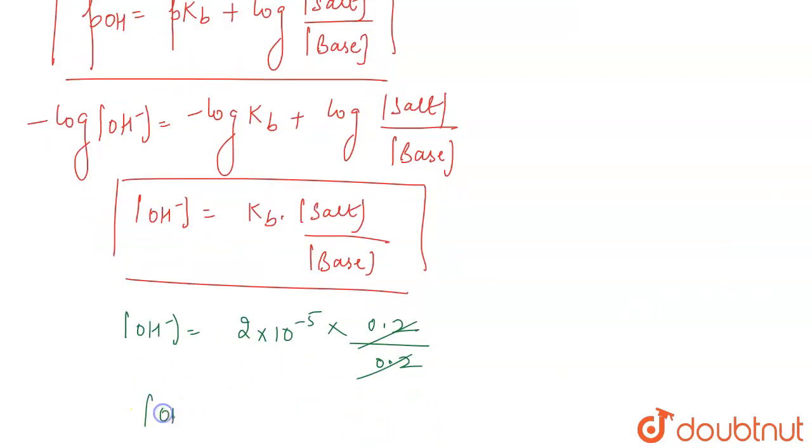So, this is a very simple question with a very simple answer. The concentration of OH- will be 2 into 10 power minus 5 molar and that's the correct answer for the question.